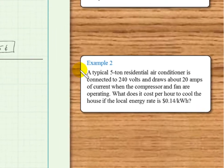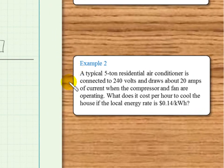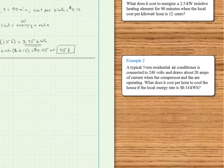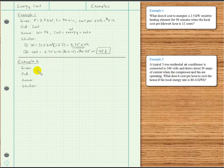A typical 5-ton residential air conditioner is connected to 240 volts and draws about 20 amps of current when the compressor and fan are operating. What does it cost per hour to cool the house if the local energy rate is 0.14 dollars per kilowatt hour, or 14 cents per kilowatt hour? Voltage is given as 240 volts and current as 20 amps.